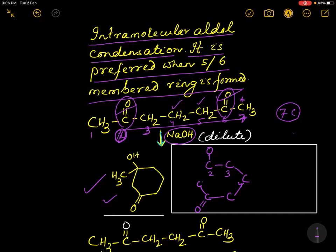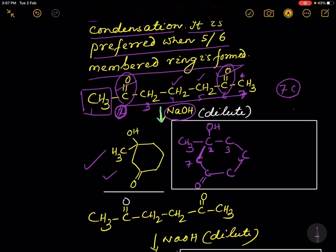Then number 7 carbon forms a bond with number 2 carbon, and number 2 carbon is connected to a methyl group. When number 7 carbon is bonded to number 2 carbon, one H atom will be removed.